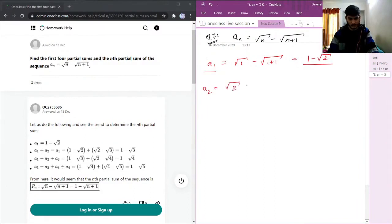Then we have a2, which will be square root of 2 minus square root of 2 plus 1. This will be square root of 2 minus square root of 3.